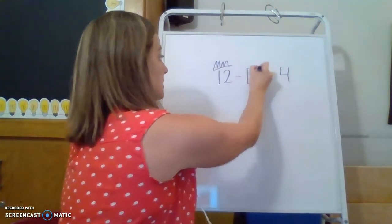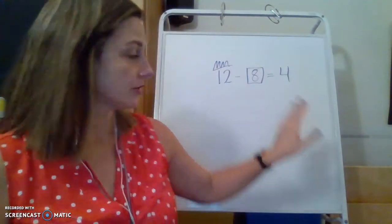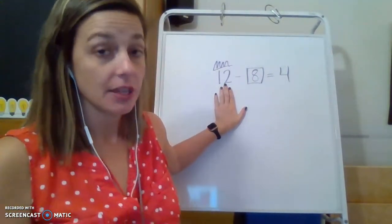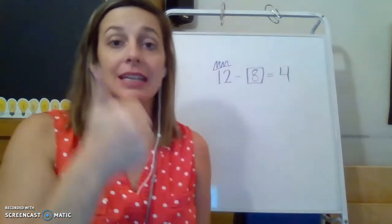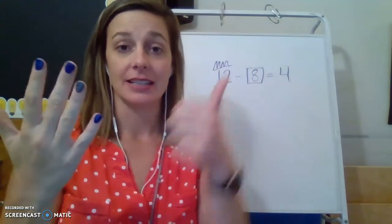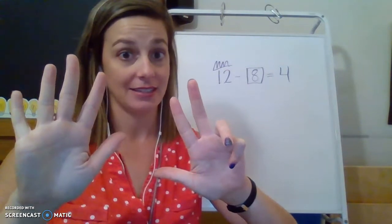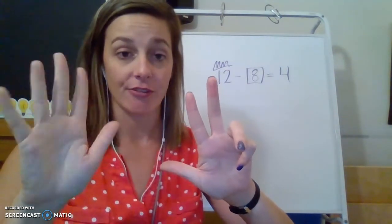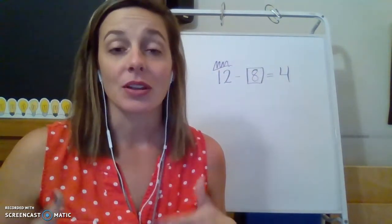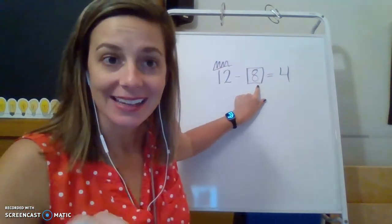Now we're going to double check just to make sure. Let's count down starting from the big number and see if we still get eight. 12, 11, 10, nine, eight, seven, six, five, four. Did I still get eight? Yes, I did. Five, six, seven, eight. It works whether we're adding or subtracting and we're missing one of our addends.